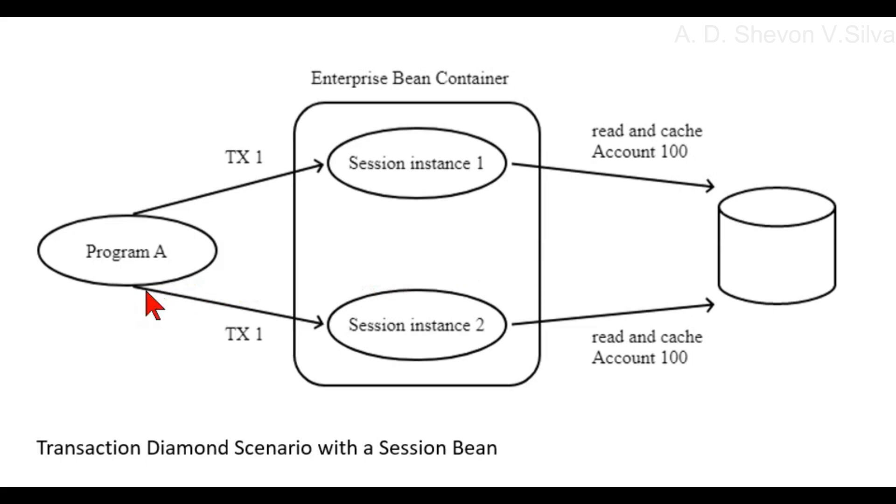In the diagram, Program A is connected to both session instance one and session instance two via TX1. Both session instances are inside the Enterprise Bean Container, and each reads and caches account 100 from the database.